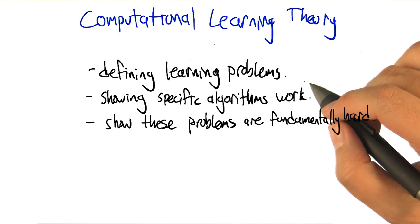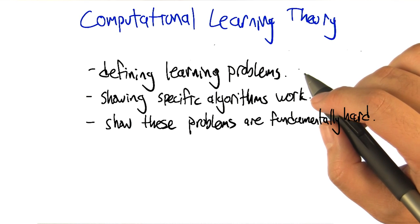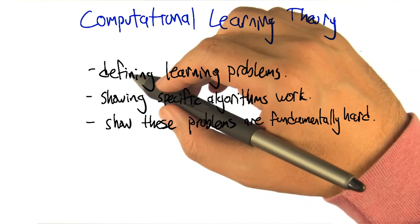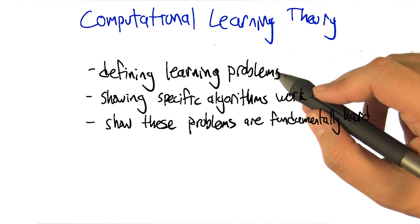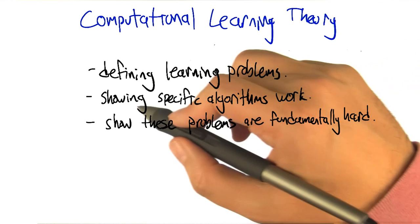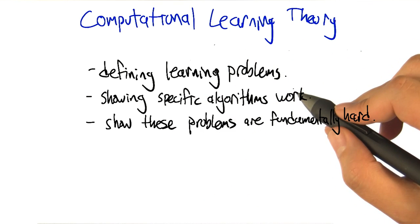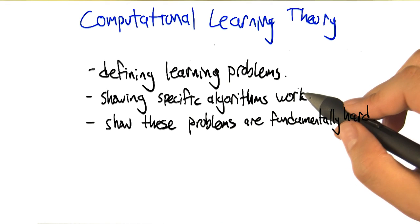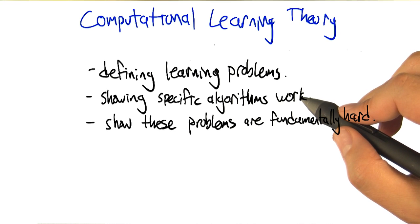Computational learning theory gives us a formal way of addressing three really important questions. One is, what's a learning problem? Let's define very carefully what it is that we want a learning algorithm to do. If we can do that, we can actually show that specific algorithms either work or don't work with regard to the definition of the problem, and maybe we can even come up with algorithms that solve those problems better.